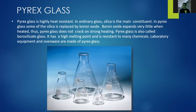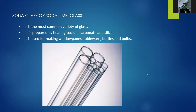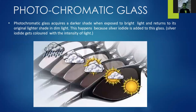Soda glass, or soda lime glass, is the most common variety of glass. It is prepared by heating sodium bicarbonate and silica. It is used for making window panes, tablewares, bottles, and bulbs. Photochromatic glass acquires a darker shade when exposed to bright light and returns to a lighter shade in dim light. This happens because silver iodide is added to the glass in its liquid state — silver iodide changes color with light intensity. Photochromatic glass is commonly seen in some sunglasses and eyeglass lenses.